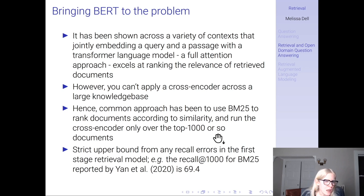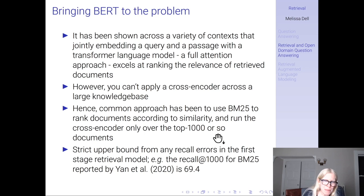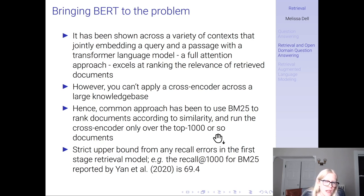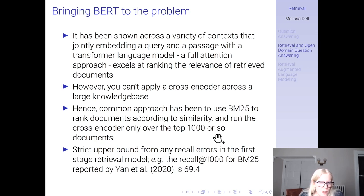It has been shown across a variety of contexts that if we jointly embed a query and a passage with a transformer language model — which is a full attentional approach — this will do a really good job at ranking the relevance of retrieved documents. But we can't apply a cross encoder across a large knowledge base. If every time you wanted to query Wikipedia you had to jointly embed your query with the 12 million articles in Wikipedia and then index all of them, that's going to take a really long time even on powerful GPUs — totally impractical.